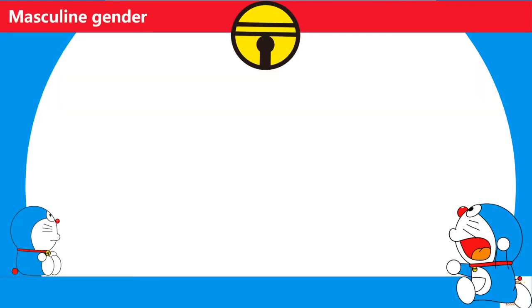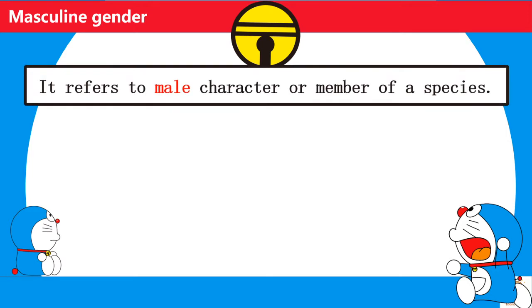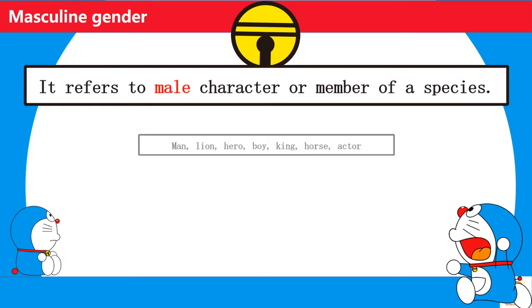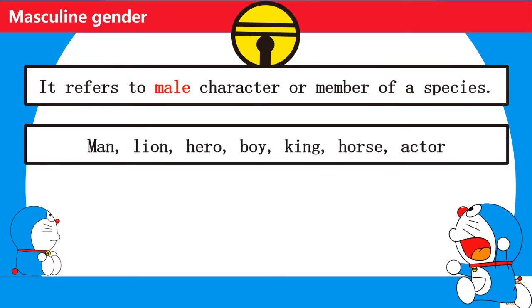Masculine Gender refers to male character or member of a species. Man, lion, hero, boy, king, horse, and actor are examples of Masculine Gender.